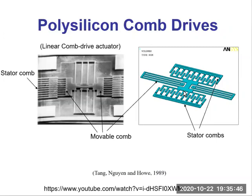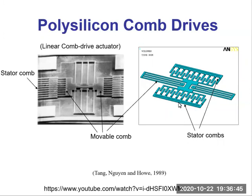Today let's discuss more surface micromachining examples. This slide shows polysilicon comb drives. As we can see in these two pictures, the interdigitated electrodes look like combs — that's the reason we call this type of device a comb drive. The central combs are movable; they are freestanding and supported by a frame structure. The outer two combs are stationary — we call them stator combs. They anchor to the substrate and don't move.